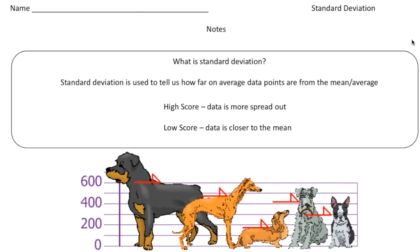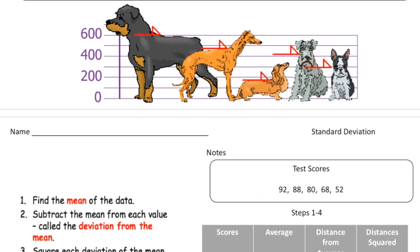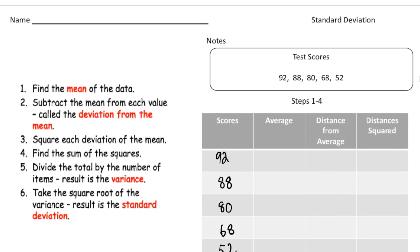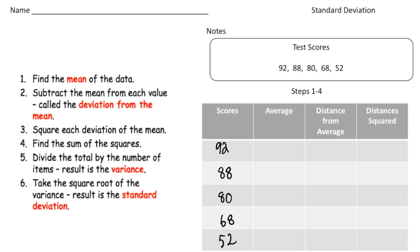Now let's go over the process to actually calculate standard deviation. We're going to look at test scores — a group of five: 92, 88, 80, 68, and 52. I've made a little table and plugged these numbers into the first column. There are six steps to find the standard deviation score.